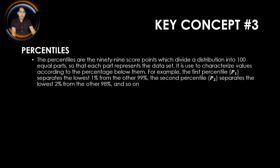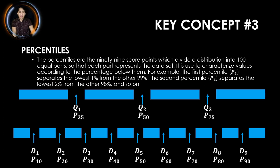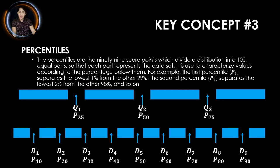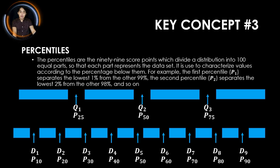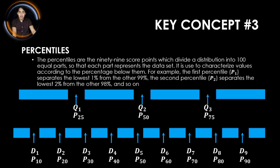Comparing percentiles to the previous quartiles and deciles, we have this illustration. From the quartile, which divides the whole into four equal parts: Q sub 1, or the first quartile, is the same as the 25th percentile, since the first quartile is the 25% of the data. Q sub 2, or the second quartile, is the same as the 50th percentile, which is the median. Q sub 3 is the same as the 75th percentile.